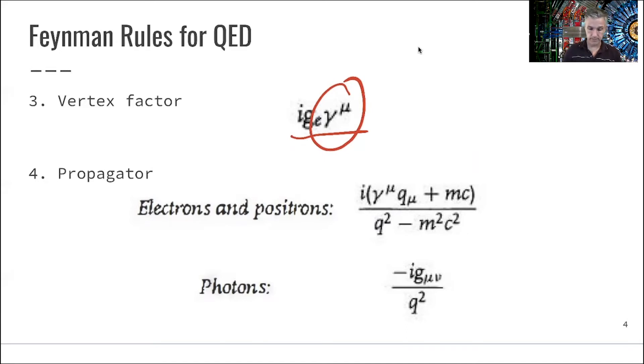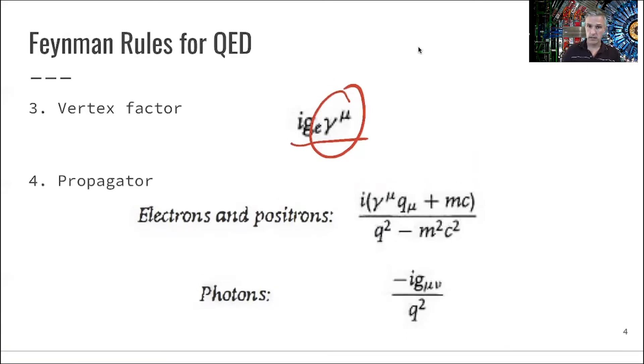For the propagator, our internal lines, we have a difference between electrons, positrons, and photons. That comes from the fact that electrons and positrons are massive particles. We have propagators which have this 1 over q-squared or 1 over q-squared minus m-squared behavior.